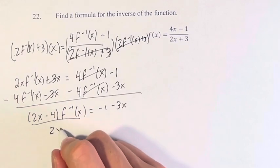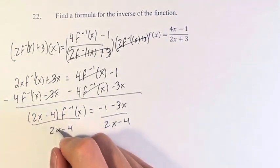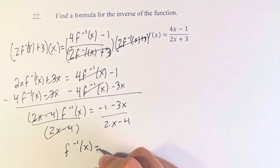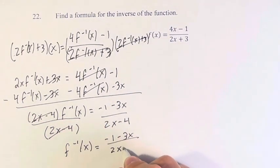Now, we just divide both sides by 2x minus 4. These cancel, and we're left with the inverse of f is equal to negative 1 minus 3x over 2x minus 4.